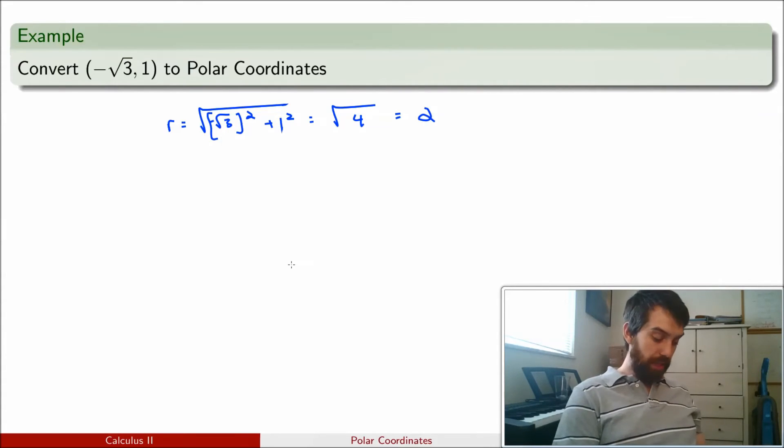That's the easy one. The slightly more complicated one is to figure out what the theta value is. So, theta is arctangent of y over x. So, arctangent of 1 over minus the square root of 3.